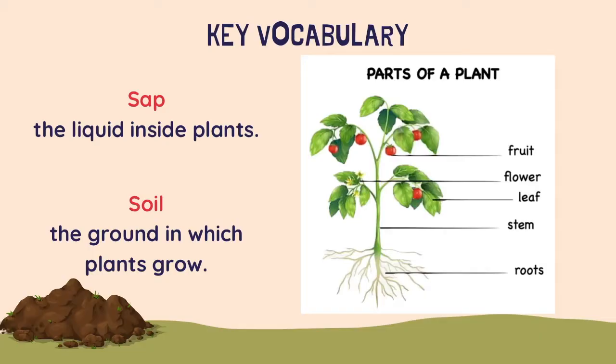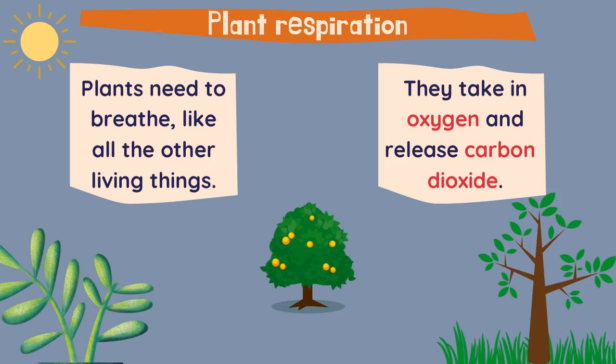let's have a look at some key vocabulary. The parts of a plant are the fruit, the flower, the leaf, the stem and the roots. And also we need to know that sap is the liquid inside the plants and soil is the ground in which plants grow.